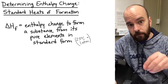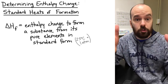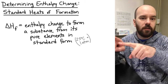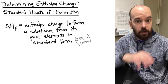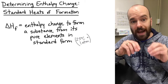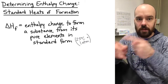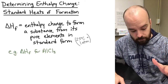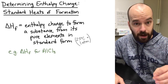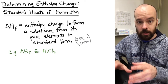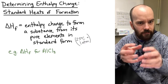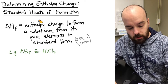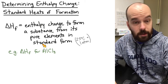We're going to write out the reactions that correspond to heats of formation values. Once we've done three examples, we'll look at an actual reaction and use those values to calculate its enthalpy change. Let's start with aluminum chloride, AlCl₃. We looked that value up online, but we need to know what reaction that value corresponds to — it's the enthalpy change to form the substance from its pure elements: aluminum and chlorine.